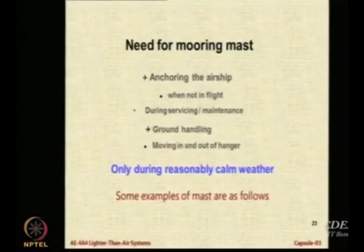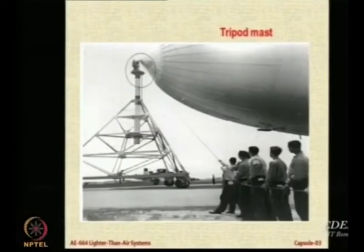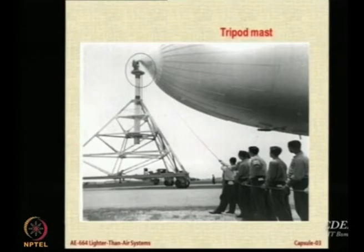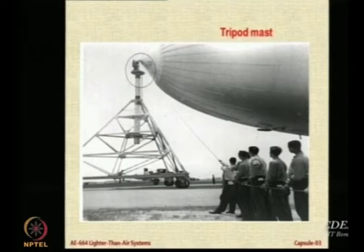We have seen what the need for mooring masts is. Now I want you to look at various types of mooring masts. For example, this is the tripod mast — a large tripod mast which is nothing but like a camera tripod. In this case, we have wheels so that we can move it around. This tripod mechanism gives it strength and stability so it can withstand the jerks and the loads.